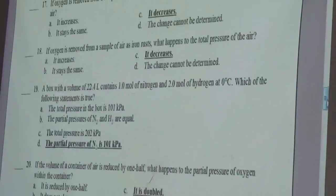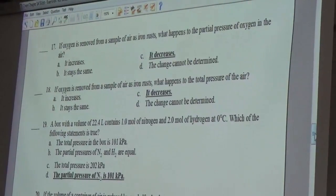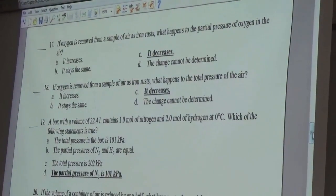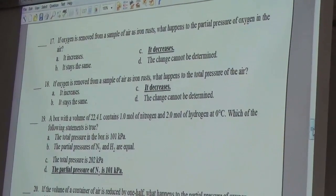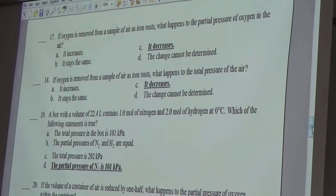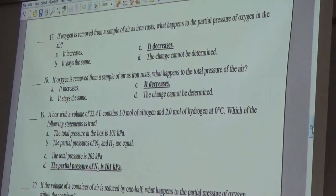If oxygen is removed from a sample of air as iron rusts, what happens to the total pressure of the air? C, increases.